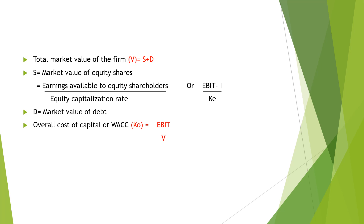The overall cost of capital, or weighted average cost of capital (Ko), is equal to EBIT divided by the value of the firm (V). So Ko = EBIT / V. This formula helps us evaluate how the overall cost of capital changes as capital structure changes.